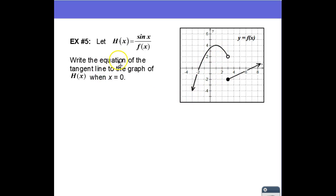So anyway, they want us to find the equation of the tangent line to the graph of h of x when x equals 0. And so the first thing I know I've got to do is differentiate this function h of x. So maybe that would be the best place to start.